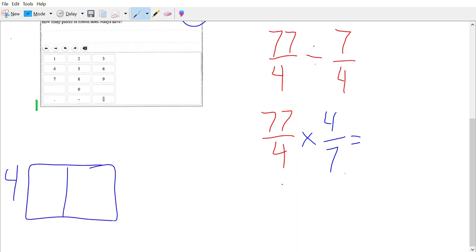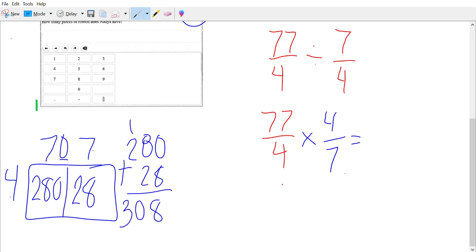77 breaks down into 70 and 7. 4 times 7 is 28, adding on a 0. 4 times 7 is 28. We're going to add our values of 280 plus 28. 0 plus 8 is 8, 8 plus 2 is 10, carry 1. 308.